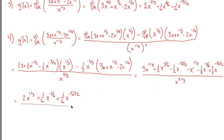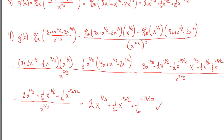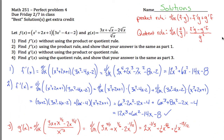Still dividing everything by x to the 2/3 on the bottom. Now divide each term: 2 x to the 1/3 divided by x to the 2/3 gives 2 x to the negative 1/3; 1/6 x to the negative 1/6 divided by x to the 2/3 gives 1/6 x to the negative 5/6; and 1/6 x to the negative 5/12 divided by x to the 2/3 gives 1/6 x to the negative 13/12. That matches the answer from part 3 exactly. Both methods — simplifying algebraically before differentiating, and using the quotient rule — give the same result.